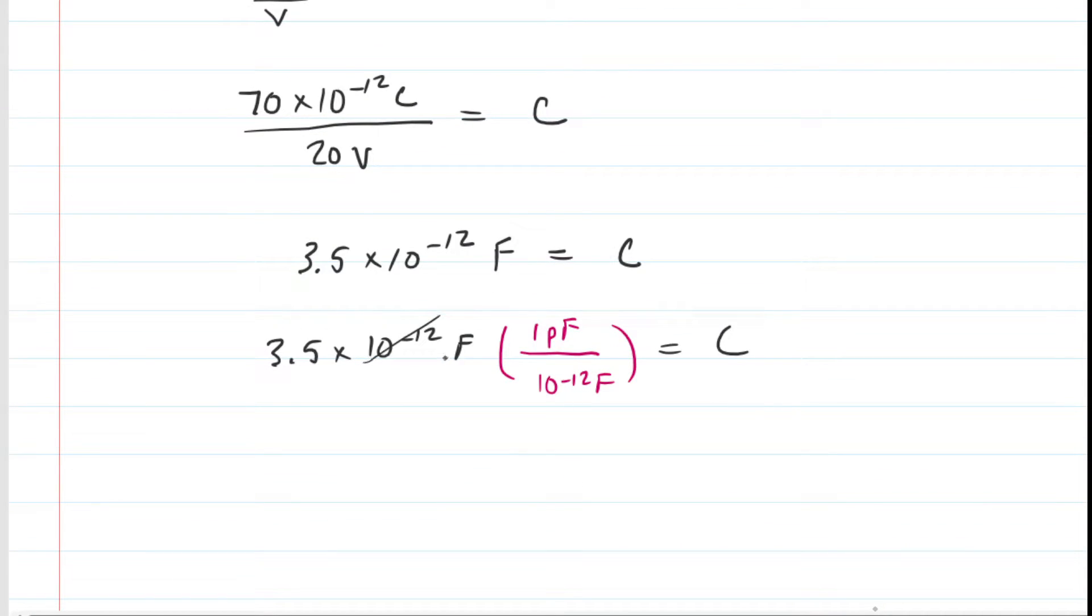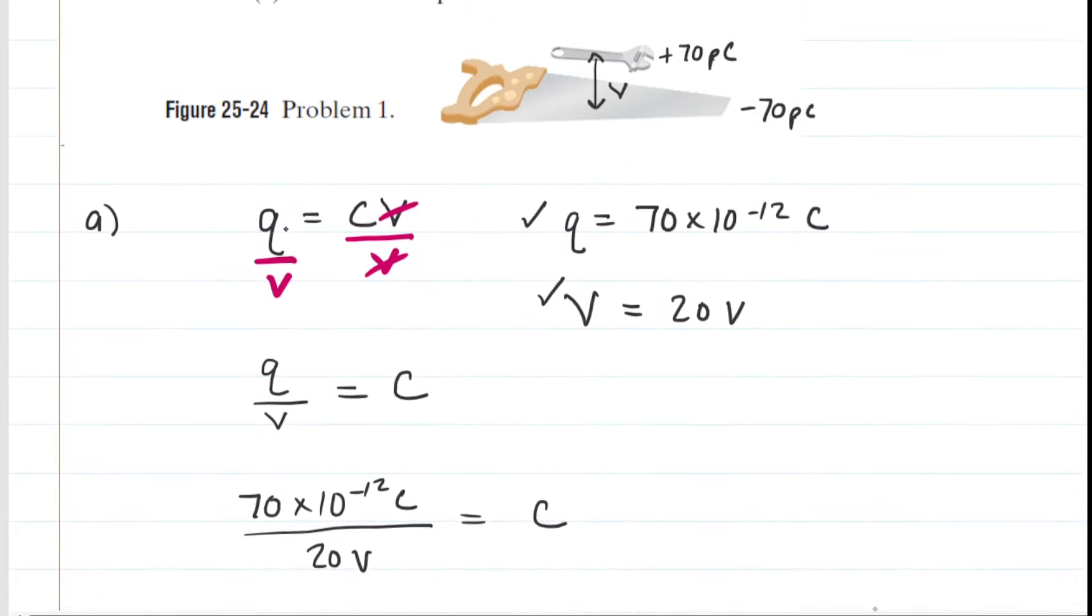We look carefully, the 10 to the minus 12 farads would cancel out, and we would be left with 3.5 picofarads. So this would be the correct answer in picofarads, and then we have the equivalent answer in farads. So those are the answers or the answer to part A of the question.